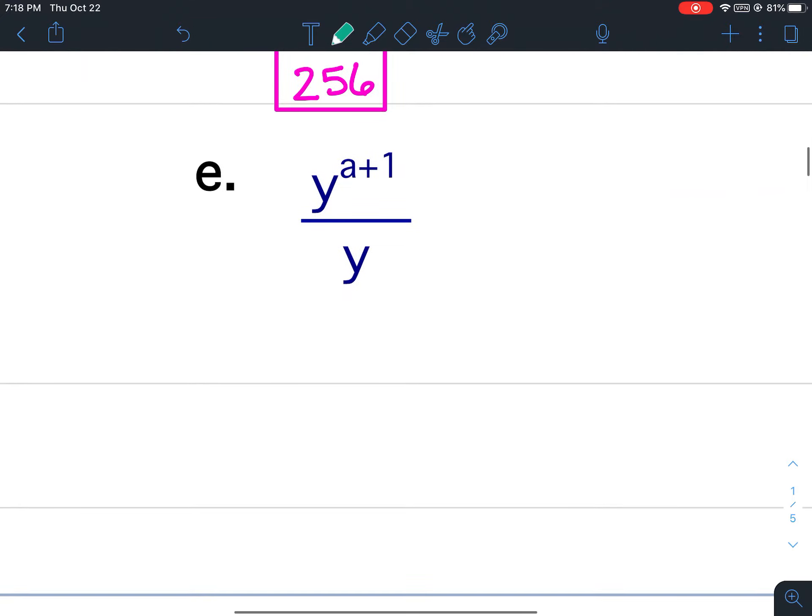For E, again put a 1. So we've got Y. The exponent in the numerator is A plus 1. We're subtracting the denominator exponent, so minus 1. Well in this case you've got a positive 1 and a negative 1 here. They would cancel out. So we would get Y to the A. 1 minus 1 would cancel, so Y to the A.